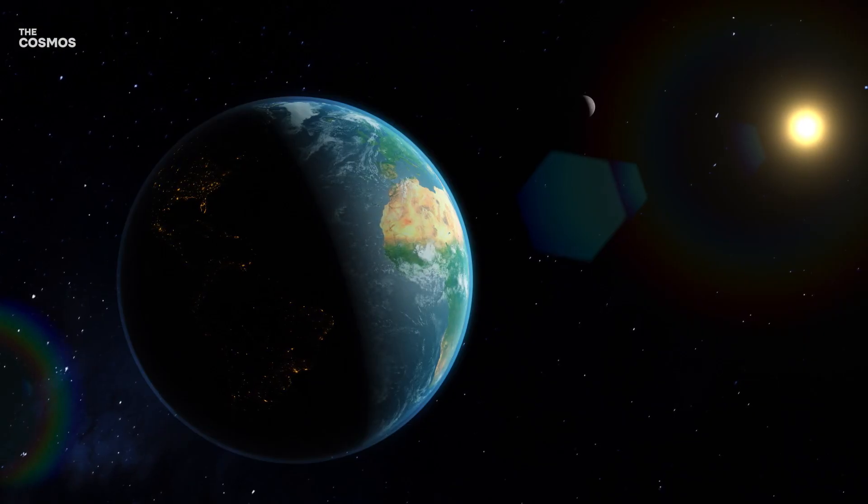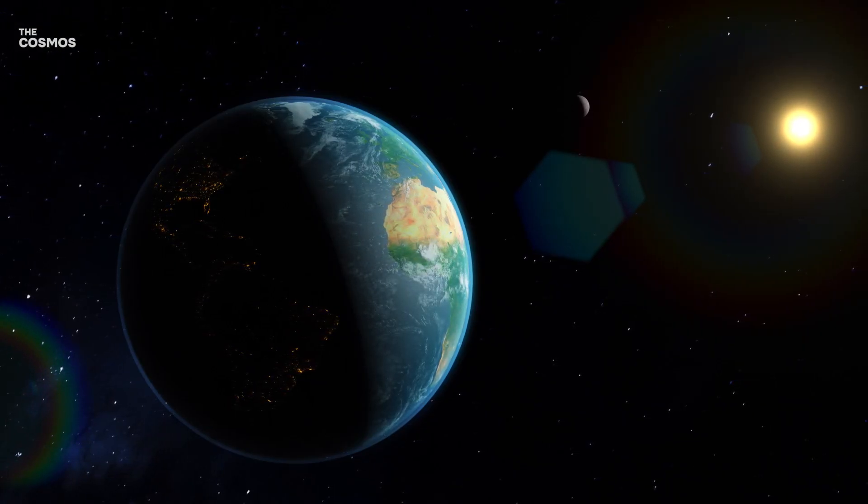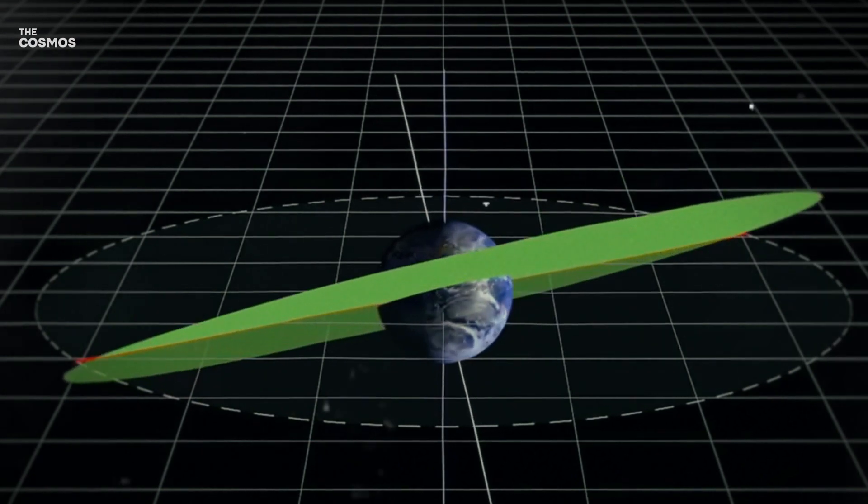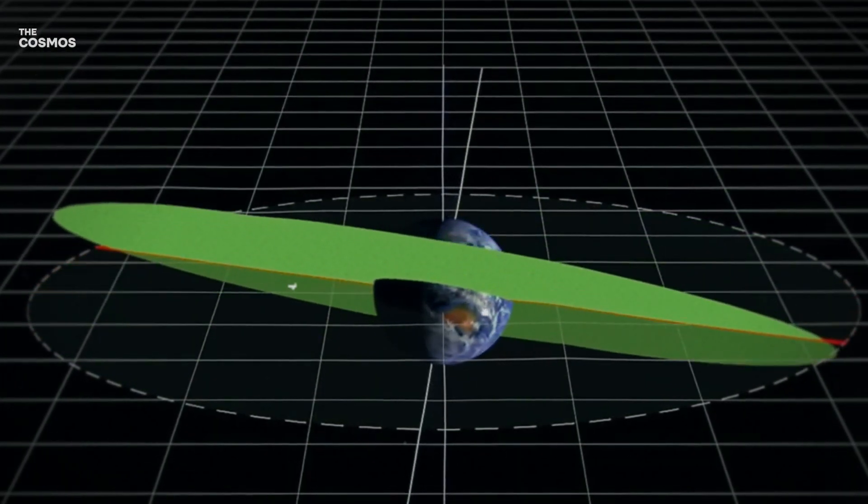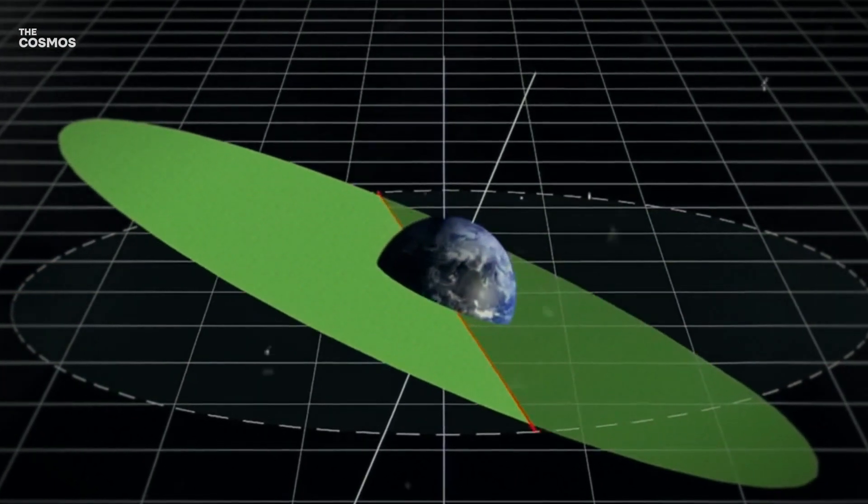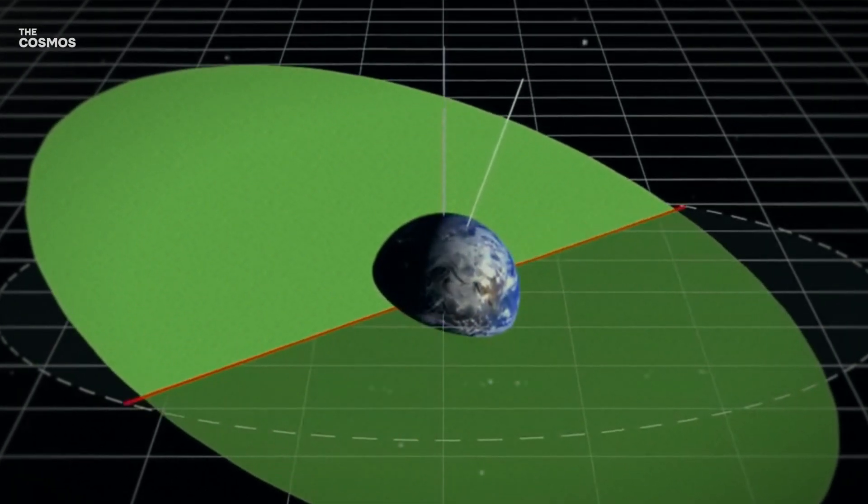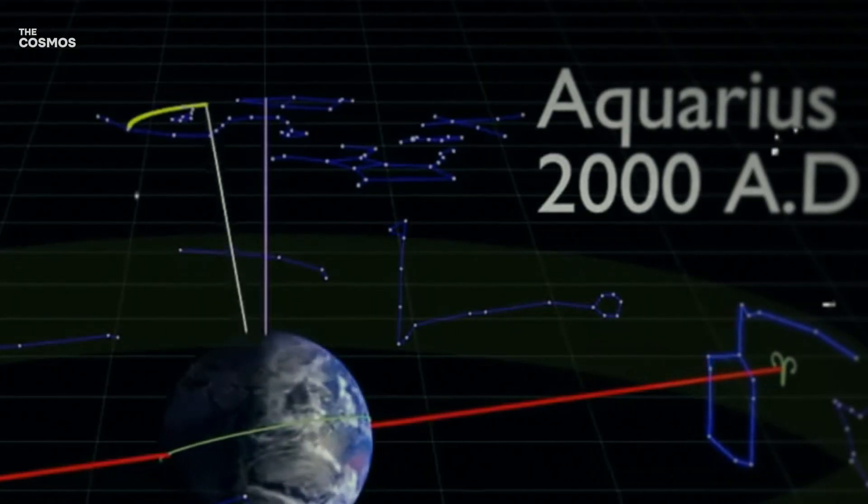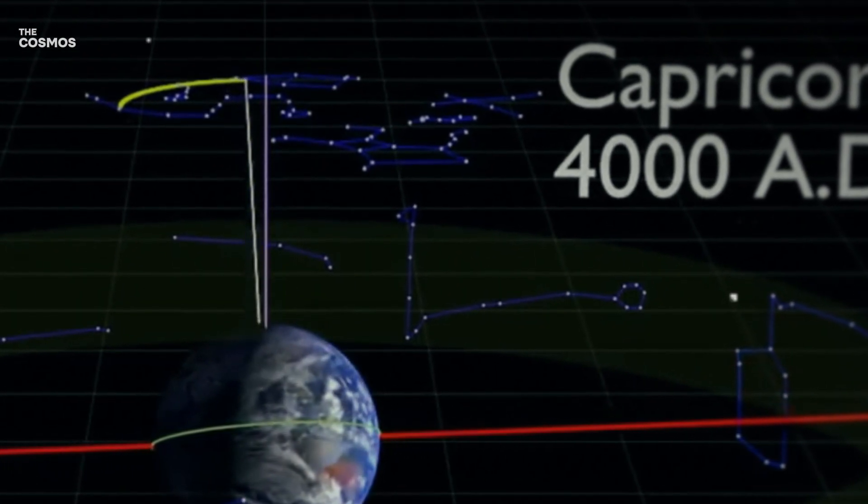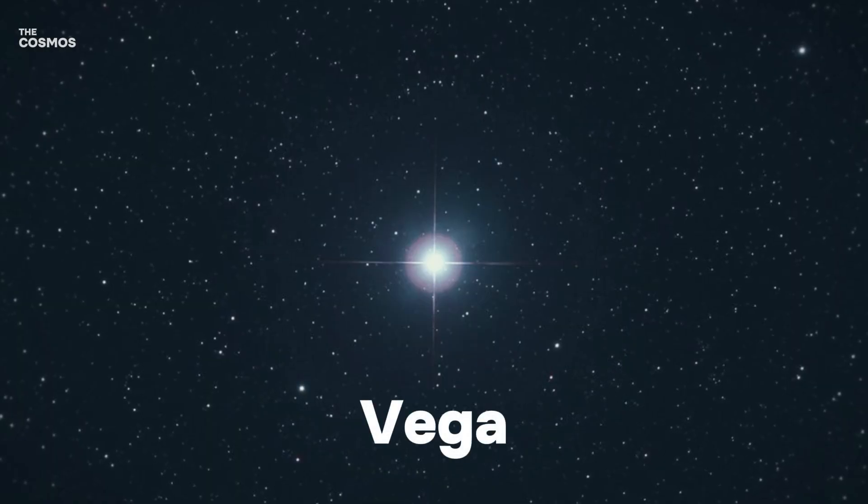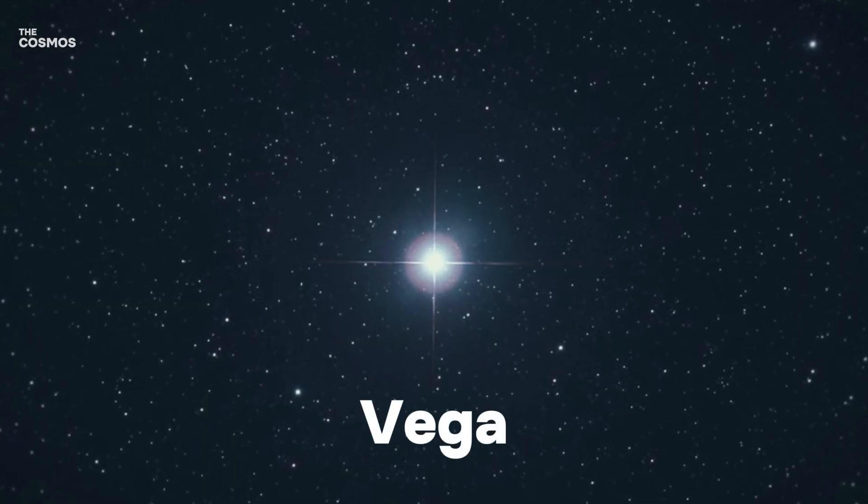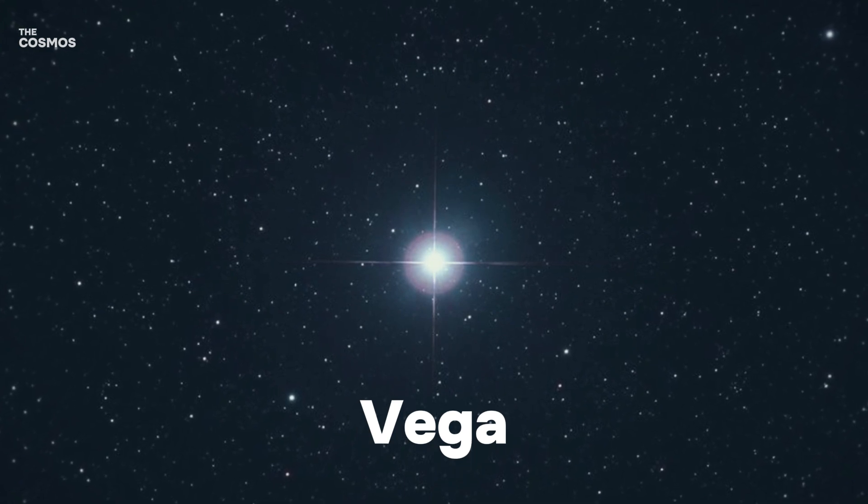However, the Earth's rotation is not as stable as one might think and undergoes a slow wobble known as axial precession, influenced by gravitational forces from the sun and the moon. This wobble causes a cyclical shift in the position of the North Star over millennia. While Polaris holds the title today, the star Vega is set to succeed it in approximately 13,000 years due to this precessional movement.